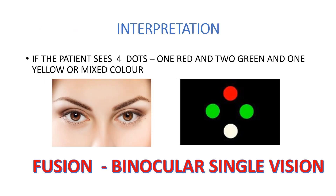So let us see how to interpret the Worth Four Dot test and the number of possible ways the patient can respond. In case of normal retinal correspondence, which means the patient has got no apparent squint, the patient will see exactly the lights as they appear. They usually see four lights: one in red color, two green ones on either side, and one in a mixed color. When the patient reports four lights, it is documented as fusion, which is binocular single vision.